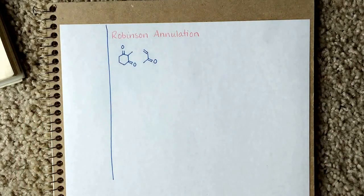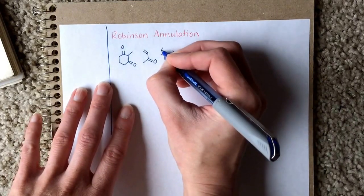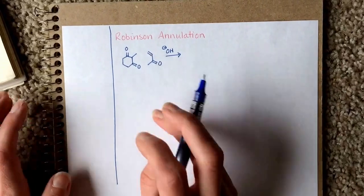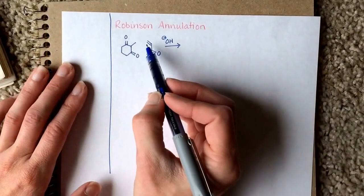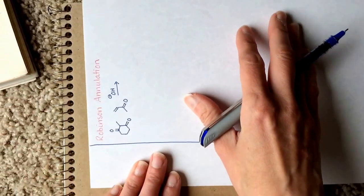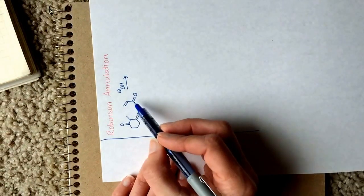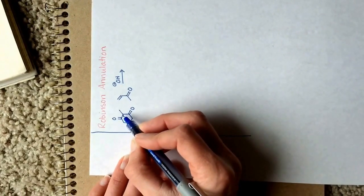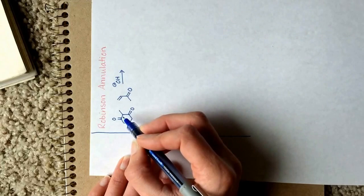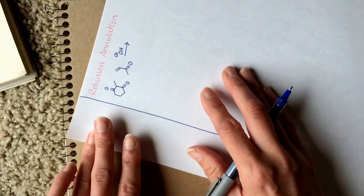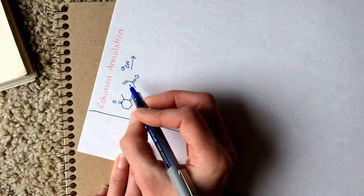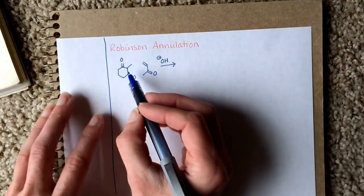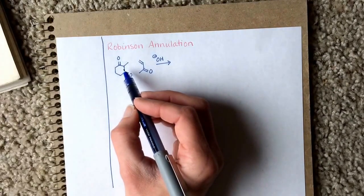It starts with a Michael addition. We have the good Michael acceptor here — drawn sideways so you can visualize the ring that's going to be formed. If you look at it in this format, you can see this is a good Michael acceptor, and this is about to be a good Michael donor. It just needs to be deprotonated at the alpha site, and then it's going to be a good enolate able to attack the beta position to the carbonyl.